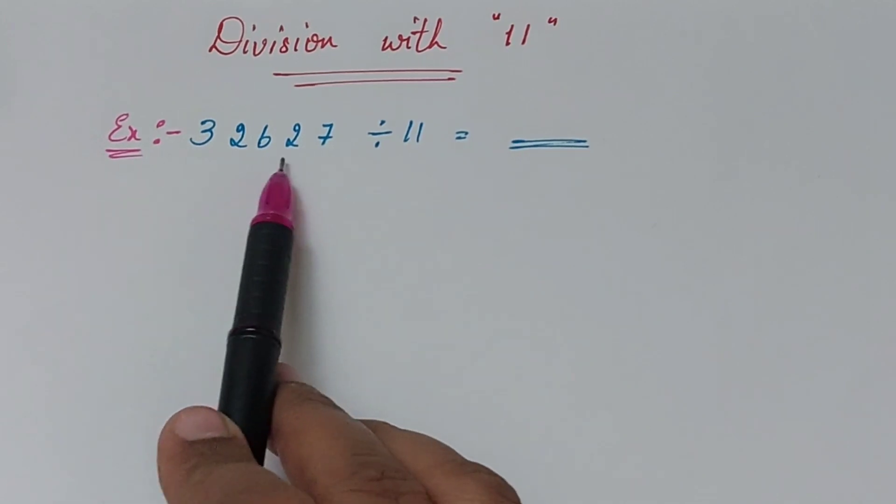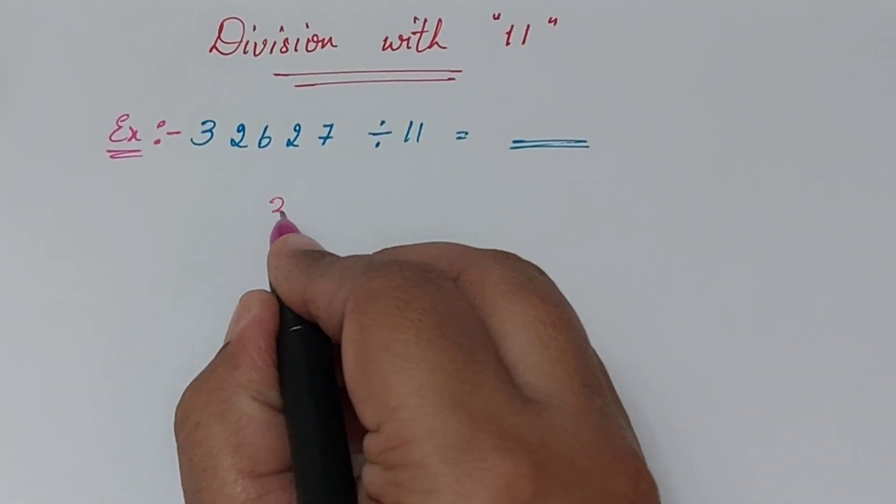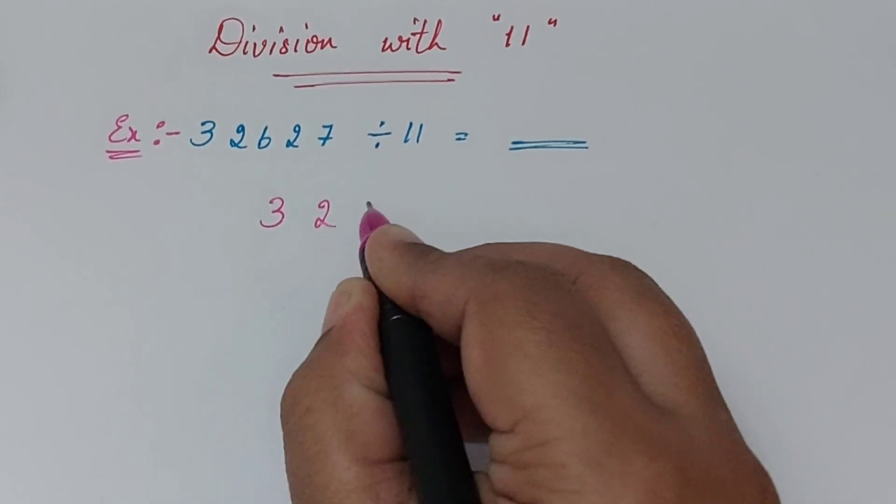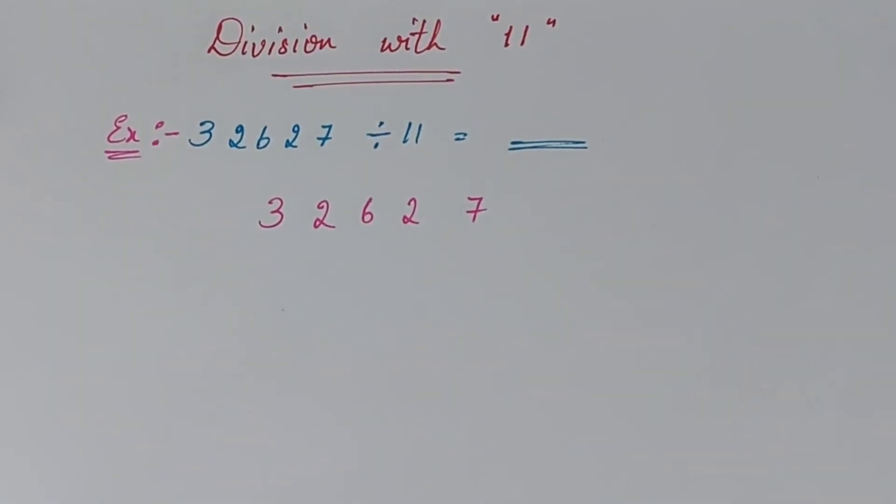So I have taken 3, 2, 6, 2, 7 divided with 11. Give a bit gap between the numbers and write down here, down. And here we are not doing with 11. Let us play a game now. Just concentrate once.